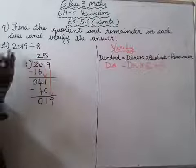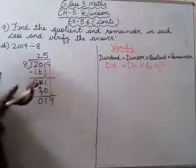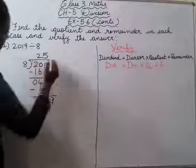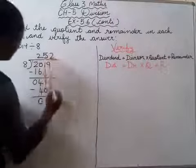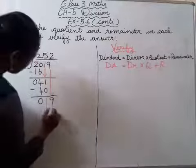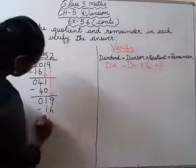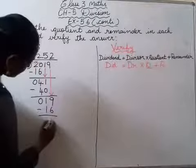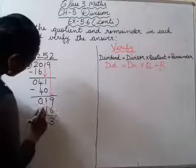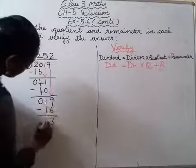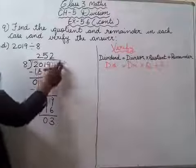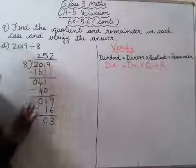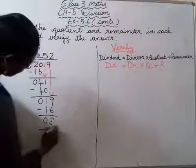8 ones are 8, 8 twos are 16, 8 threes are 24. 8 twos are 16 hum le sakti hai. So 8 twos are 16. Minus. 9 minus 6 will be 3. 1 minus 1, 0. Iske baad koi number dividend mein nahi hai, toh aise ki aise hi chhodna padega.